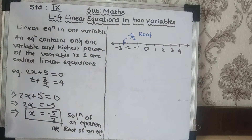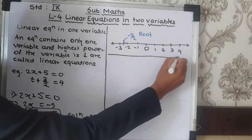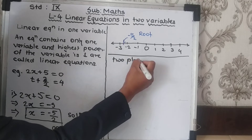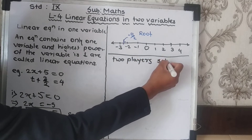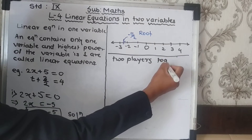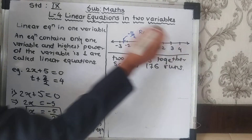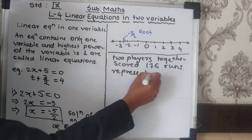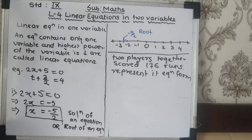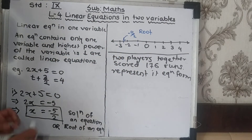Now we will move ahead to linear equations in 2 variables. For example, there is a match played between India and Sri Lanka. Two Indian players together scored 176 runs, and it is asked to represent it in equation form. Here, 'together' in maths means addition.